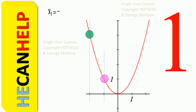X is changing from negative 2 to negative 1. When X is equal to negative 2, Y is equal to positive 4. So what is our point? Negative 2, positive 4. And this is X1, Y1.